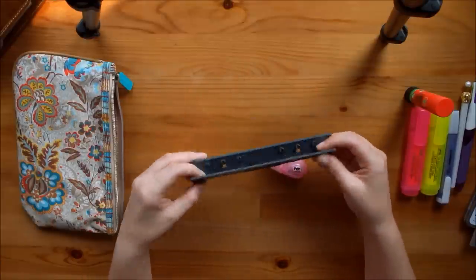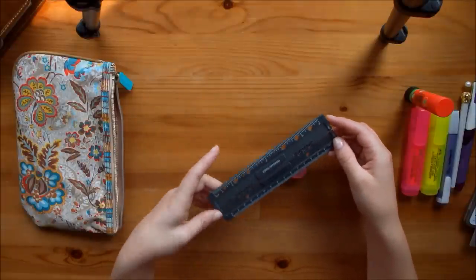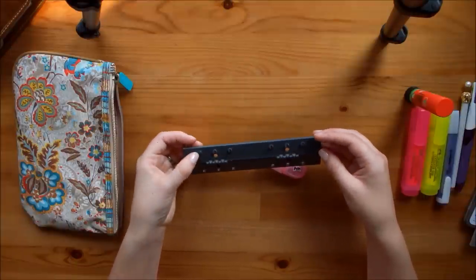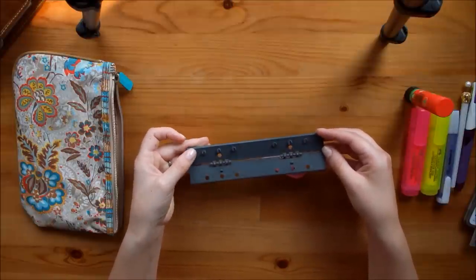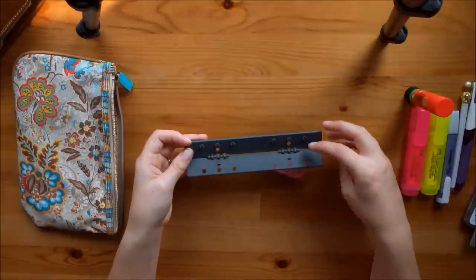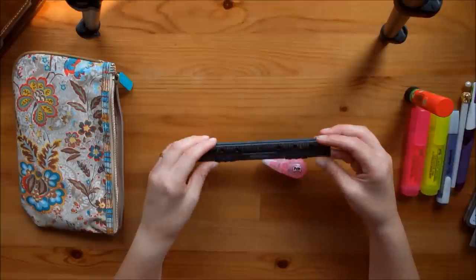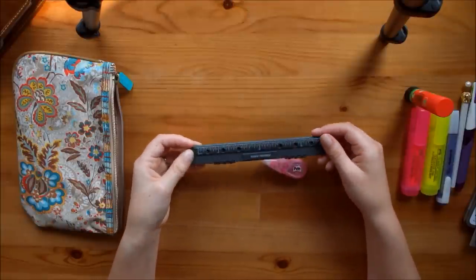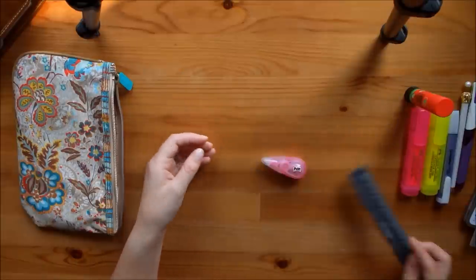And then I have this personal travel hole punch for the Filofax. Now, this is not very sturdy. This is not metal. This is plastic. So it's not very sharp. You can punch paper with this, like single sheets of paper. But this is not sturdy enough to punch heavy duty card stock or something that's been laminated. But I keep this if I have a list or something that I just want to hole punch and put in my Filofax.